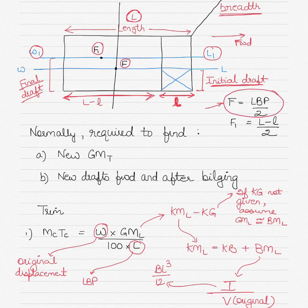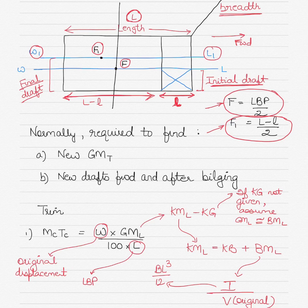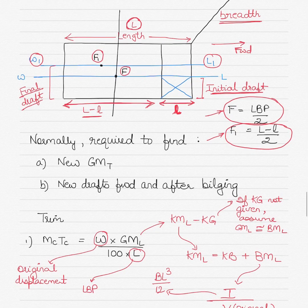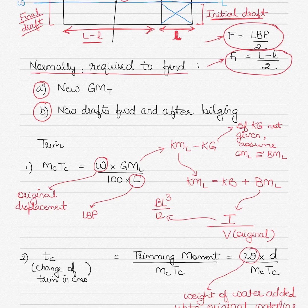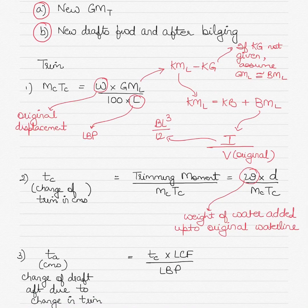The original center of flotation is found by dividing the length between perpendiculars by 2. The revised center of flotation, marked as F1, can be found by dividing (L minus l) by 2, where L minus l is the overall length of the ship minus the length of the compartment. When you see a question like this in your exams, you will normally be required to find either a new GM, trim, new drafts, or both, or a component based on the formula for the calculation of one of them.